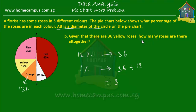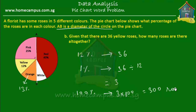We want to find out how many roses there are altogether, so we need to find 100% of the roses. Since 1% is equal to 3 roses, then 100% would be equal to 3 times 100, which is equal to 300 roses. So altogether there are 300 roses. That's the answer — quite easy.